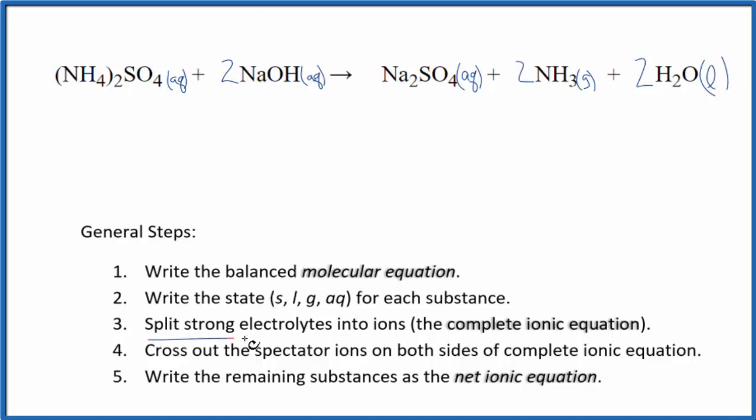Now we can split the strong electrolytes into their ions for the complete ionic equation. The ammonium ion right here is always one plus. Good one to remember. We have two of them. So two ammonium ions. Plus we have the sulfate ion here, which is always two minus. So we have our SO₄²⁻.